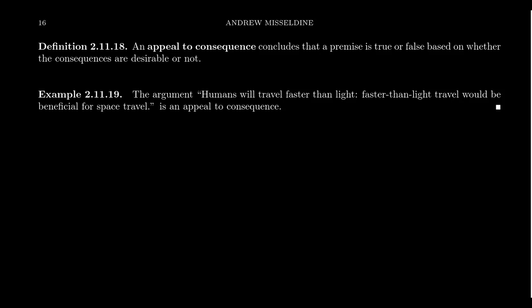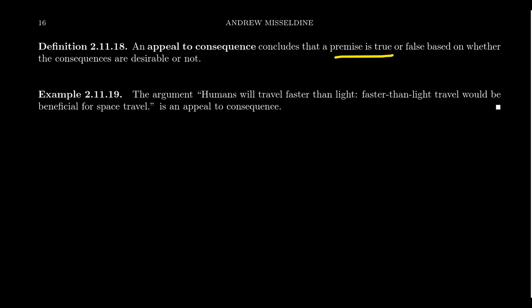One last one to mention is what we call an appeal to consequence. This logical fallacy concludes that a premise is true or false based on whether it would be desirable if it were true. For example: "Humans will travel faster than light — faster-than-light travel would be beneficial for space travel, so therefore it's going to happen someday." It could actually be that the laws of physics forbid faster-than-light travel. Just saying that space travel would be good doesn't make it possible. We want to avoid this type of fallacy.